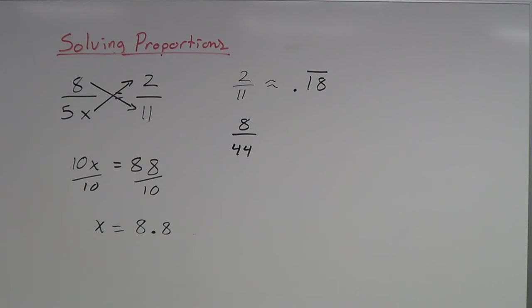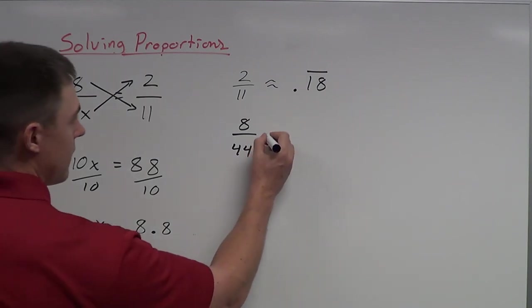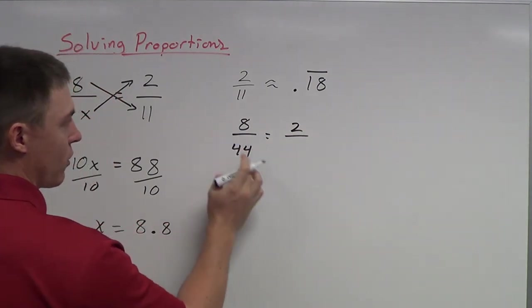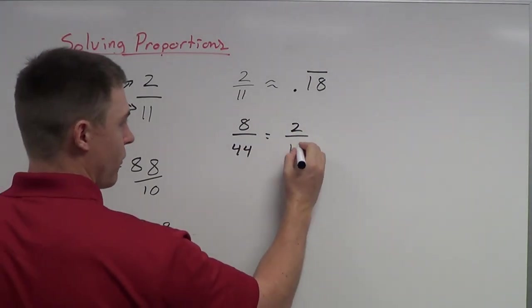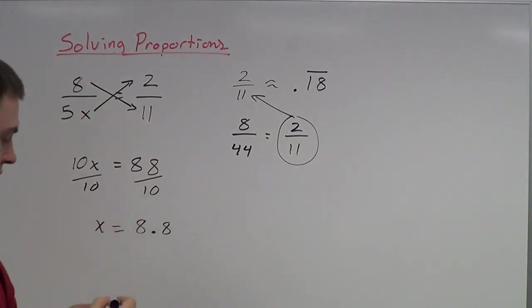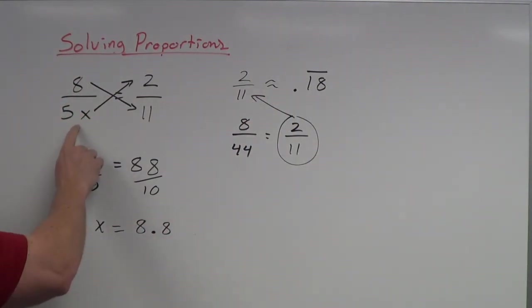Now one thing I can do is I can take 8 divided by 44, plug it into my calculator and see what kind of decimal I have. Or, if I don't have a calculator with me, I can simply just reduce this. So I know that 4 goes into both of these, so that leaves me 2 over 11. See, so now notice that this fraction is the same as what we have up here. So that tells me that the left and the right sides were in fact the same with a solution of 8.8.